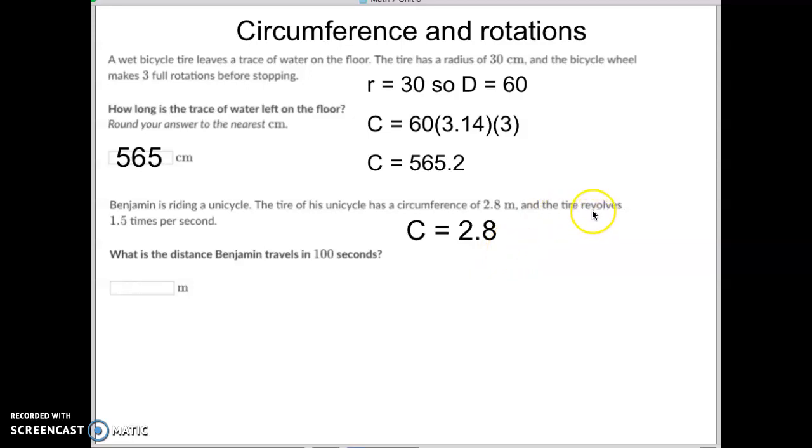But the tire revolves 1.5 times per second. And they want to know how far will he travel in 100 seconds? So we need to take this circumference and we need to multiply that by 1.5 to figure out how much it travels per second. And then we need to multiply that by 100 to find out how much it would go in 100 seconds. And when I do that wonderful multiplication, it comes out to be 420.